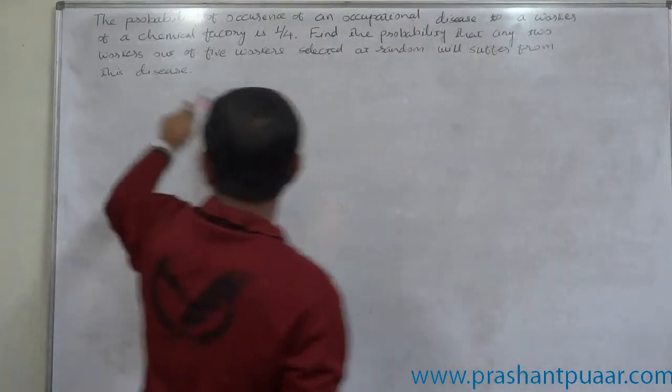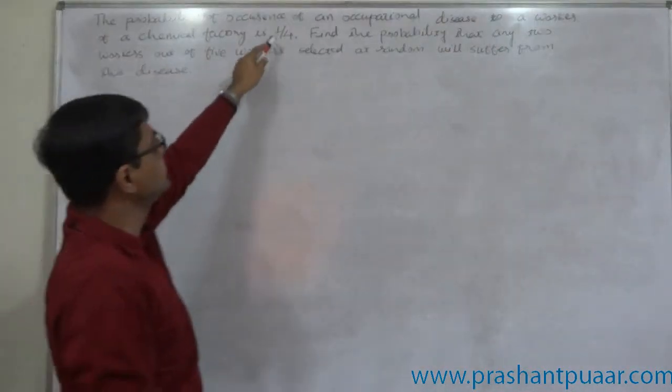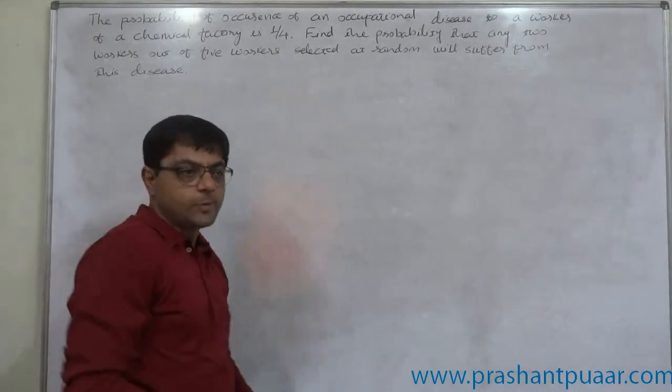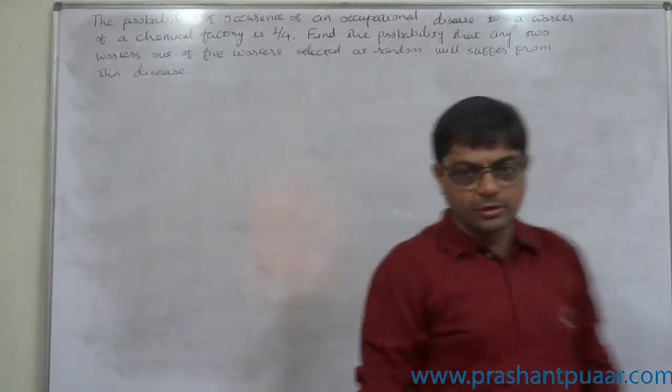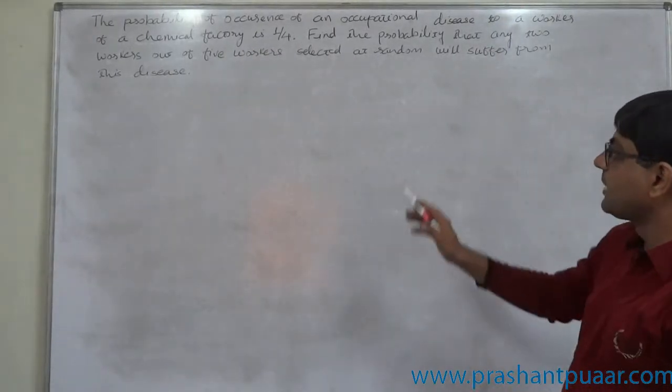The probability of occurrence of a disease to a worker of a chemical factory is 1 by 4. This is the general probability of suffering from a particular disease in a chemical factory, 1 by 4.